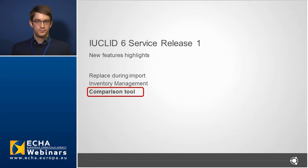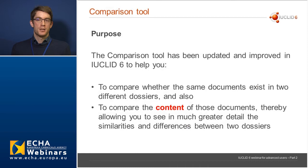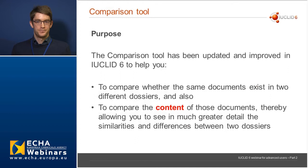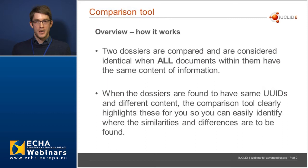Moving on to the comparison tool. The comparison tool has been updated and improved in IUCLID 6 to help you compare whether the same documents exist in two different dossiers, and also to compare the content of those documents, allowing you to see in much greater detail the similarities and differences between two dossiers. Two dossiers are considered identical when all documents within them have the same content. When dossiers have the same UUIDs but different content, the comparison tool clearly highlights these.